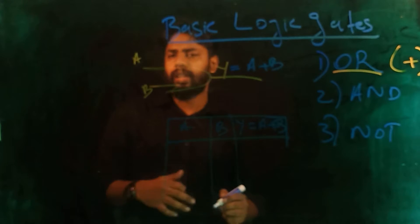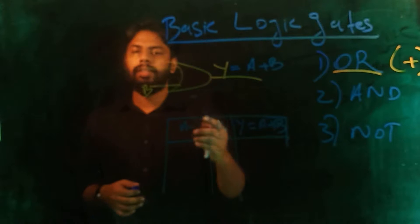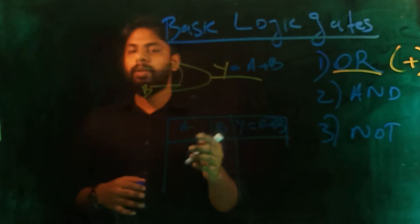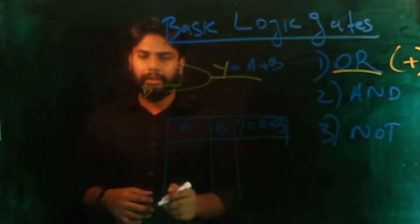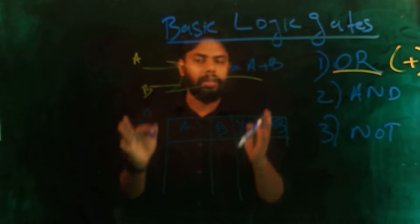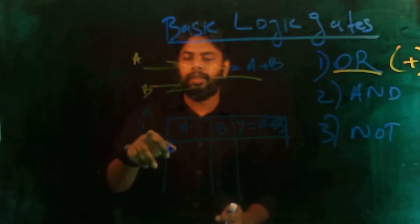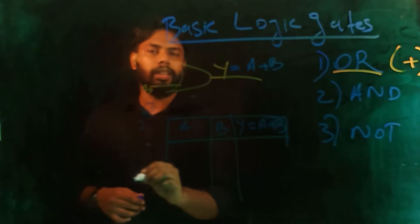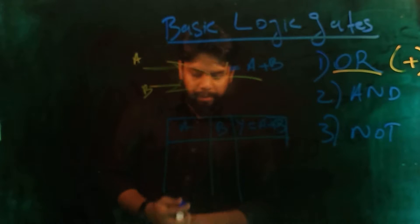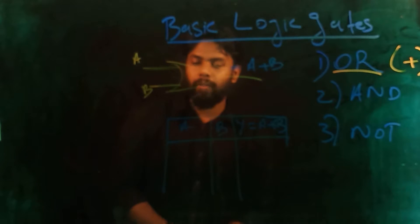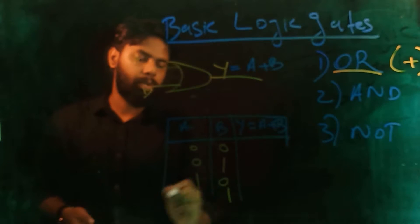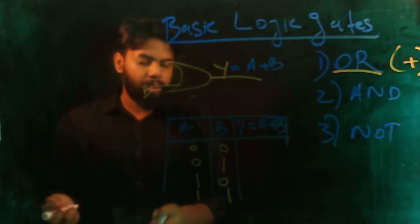In a digital circuit, with positive logic we have two values. There are four combinations — two power two, that is two power n. We have two variables A and B, so two power two gives four combinations: 0,0 then 0,1 then 1,0 then 1,1. This is the output A OR B.